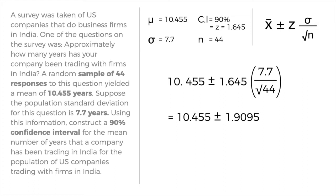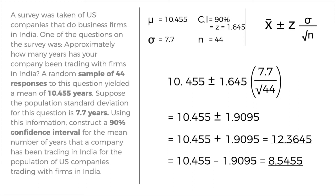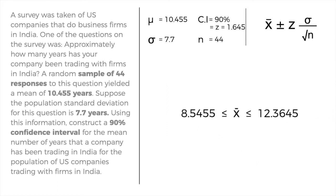Computing the right side of the equation: 1.645 multiplied by 7.7, all over the square root of 44, gives us 1.9095. So we have 10.455 plus or minus 1.9095, yielding two answers: 10.455 plus 1.9095 equals 12.3645, and 10.455 minus 1.9095 equals 8.5455. The final answer is written as 8.5455 ≤ X ≤ 12.3645.